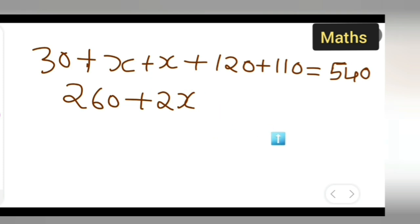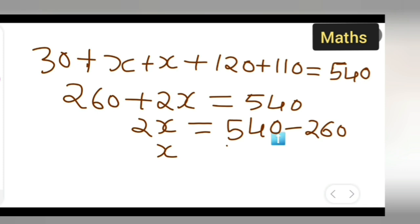So this is 540. Now you can write down 2x equals 540 minus 260. You will have to subtract first, so 540 minus 260 is going to give you 280.